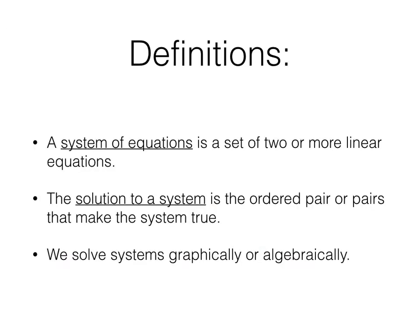A system of equations is a set of two or more linear equations. So you can have a set of three. Usually if you have three equations you have three variables, but we're going to be sticking to only equations with two variables. The solution of a system is the ordered pair or ordered pairs that make the system true. So that would be the ordered pair XY that is the same for both equations. We're going to solve systems both graphically and algebraically. This video is all about the graphically part.